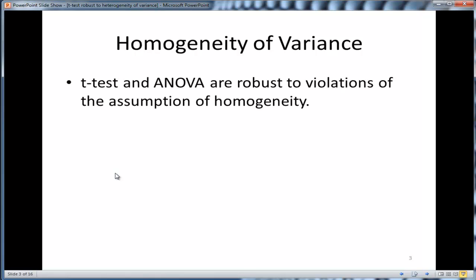Many people state, or you can read in books and papers, that the t-test and ANOVA are robust to violations of the assumption of homogeneity. Robust means, typically, the alpha level, which we typically specify at 0.05, is not deviating from that by more than plus 0.01 or negative 0.01. As long as alpha is really staying between 0.04 to 0.06, we would state that a particular statistic is robust.